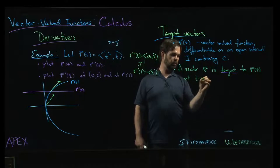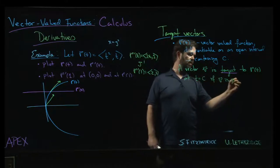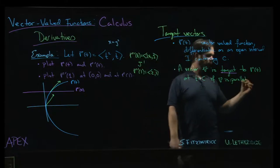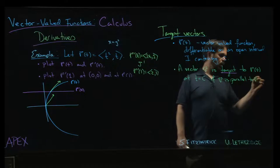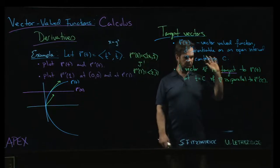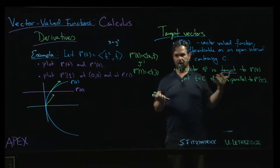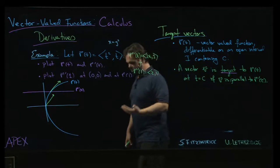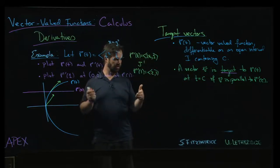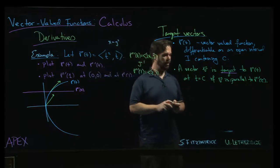At this point, t equals c, if v is, well, parallel but not zero, parallel to r prime of c, right? Typically we would think of r prime of c as the tangent vector, but of course you can rescale. You may, for example, want to take a unit tangent vector. Sometimes you want magnitude one for your tangent vectors, but we can do that.